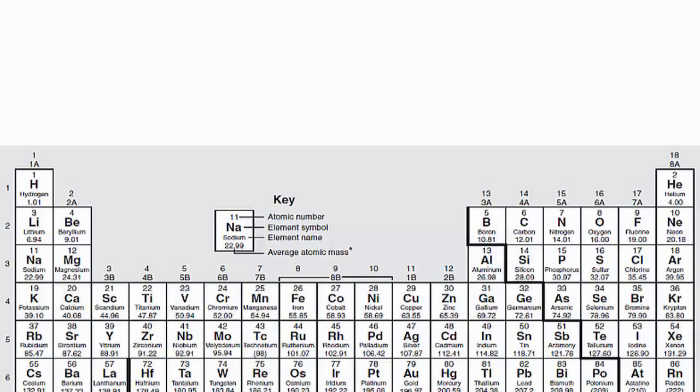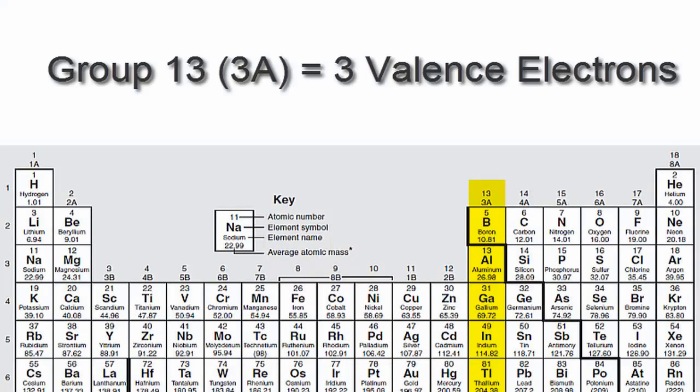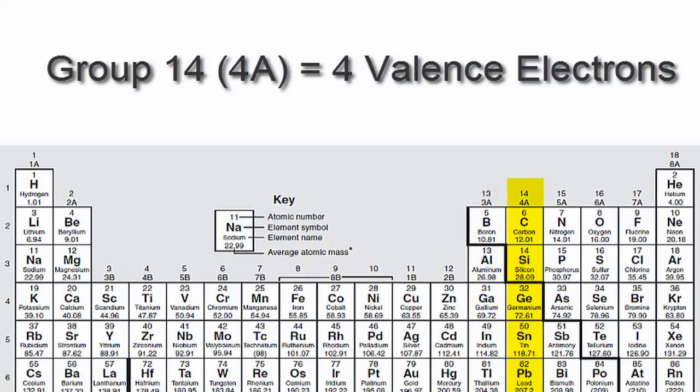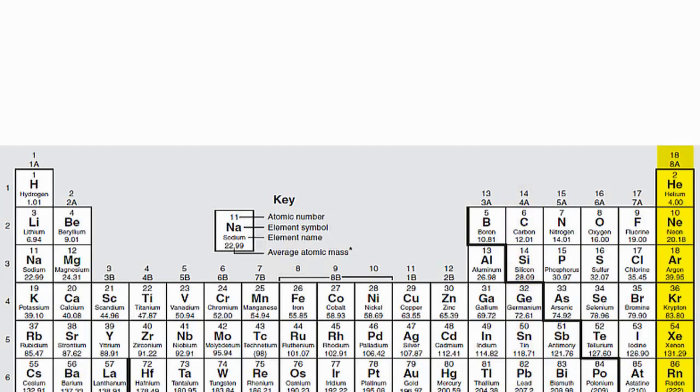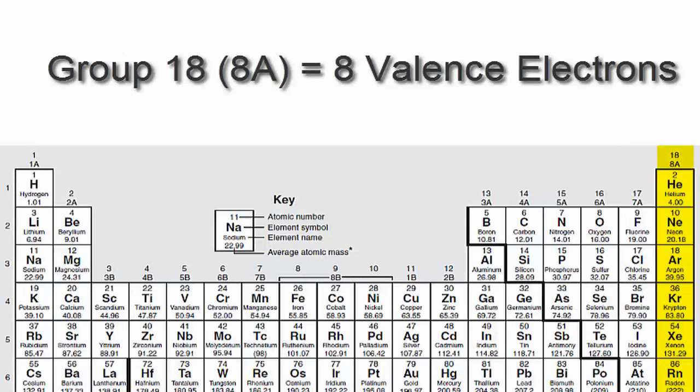We'll go to 13 or 3A, which have three valence electrons, then 14 or 4A, each of those elements in group 14 or 4A have four valence electrons, all the way up to group 18 or 8A, which have eight valence electrons.